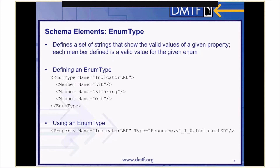An enum type is used to define a set of strings that show valid values of a given property. Each member defined is a valid value for a given enum. An enum type is given a name so that it can be referenced by properties using the data type, and a set of members which also have string names. In this CSDL example, we defined an enum type called IndicatorLED, and it contains three members: lit, blinking, and off. In some other portion of the schema file, a property is defined that references this enum — we defined a property named IndicatorLED with the data type resource.v110.IndicatorLED. This means the service can only return the string values lit, blinking, and off for that property.